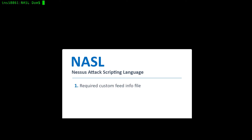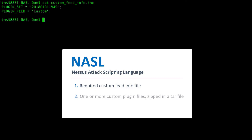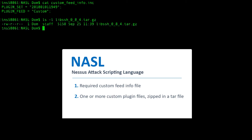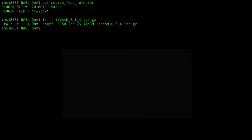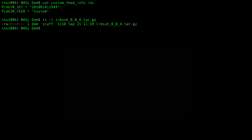A required custom feed info file, which looks like this. One or more custom plug-in files zipped up in a tar file. And optionally, a certificate of authenticity, or CNA file. Once you have all three components, we're going to gather the files together into another tar ball.